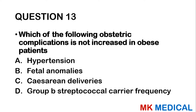Question 26: Vaginal delivery is contraindicated in the presence of: A — previous cesarean section for CPD. B — cord prolapse in second stage. C — transverse lie of second twin. D — previous uterine rupture. E — previous ectopic pregnancy. With cord prolapse in the second stage of labor, you would immediately convert to cesarean section. The answer is B.